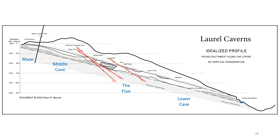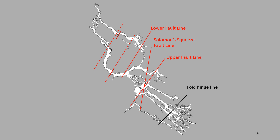Here is a profile map of the cave constructed by Ryan Maurer. Ryan and Hope Brooks made many strike and dip measurements in Laurel Caverns. In the cave, they found an apparent hinge line where the dip changes from 10.6 degrees to 15.7 degrees. The maze section of the cave all formed left of the hinge line where the dip is lower. Middle cave descends from this hinge line to the upper and Solomon squeeze faults. The flue lies between the upper fault and the lower fault. The upper and lower faults both trend about north 30 degrees east. Solomon squeeze fault trends about north 7 degrees east, while this hinge line trends about north 40 degrees east.